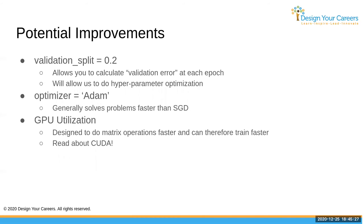Here are some potential improvements. Validation splits give us a way to calculate validation error at each epoch - they show how well we're doing without looking at the test set. Using Adam optimizer typically does better than SGD. Another potential improvement is using the GPU, which is much more efficient at doing matrix multiplication and convolutions for these kinds of tasks.